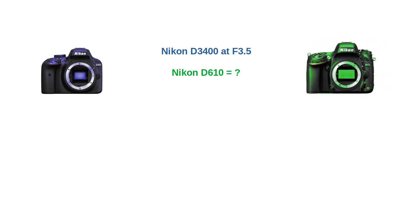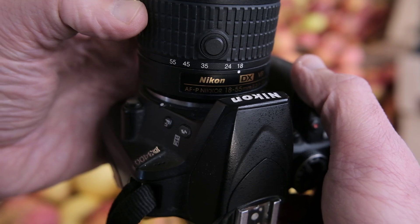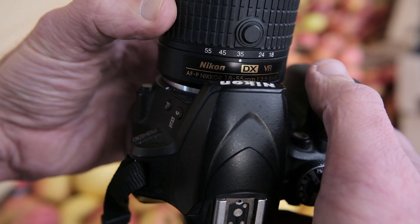To match the depth of field, you need to stop down or close the aperture on the full-frame Nikon D610. You can calculate the equivalent aperture for the full-frame camera by simply multiplying the crop sensor aperture by the crop factor. In this case, the D3400 is set at f-stop 3.5, so the full-frame equivalent aperture would be 3.5 × 1.5 = 5.25. To keep things simple, we'll round this to f/5.6. So to get the same depth of field on the Nikon D610, you'll need to set the aperture to f/5.6. This will give you the same amount of focus from front to back as the D3400's f/3.5 setting.